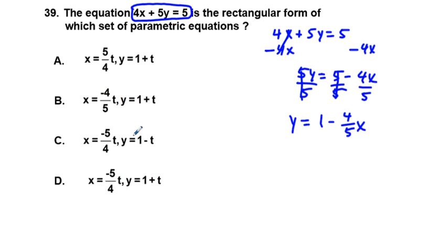If we take the equation, let's say, x equals negative 5 fourths t. And we want to solve for t to plug into this second equation here. We multiply by negative 4 fifths. And we multiply by negative 4 fifths. We get negative 4 fifths x equals t.